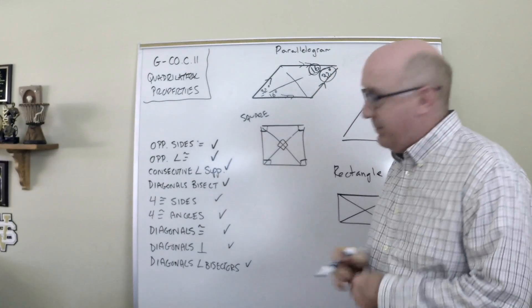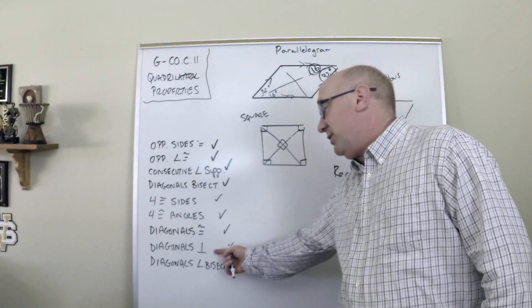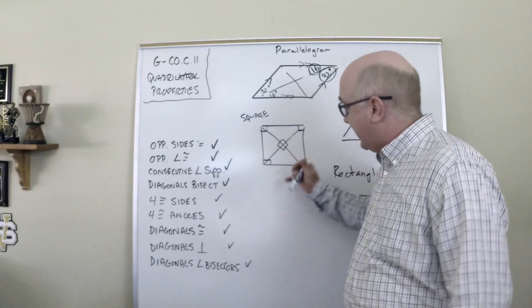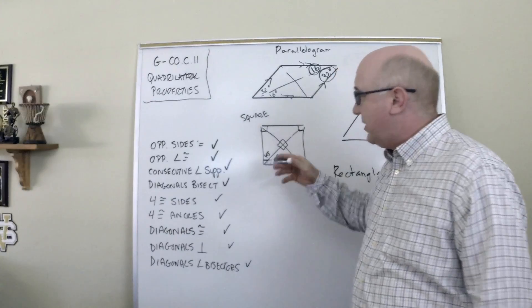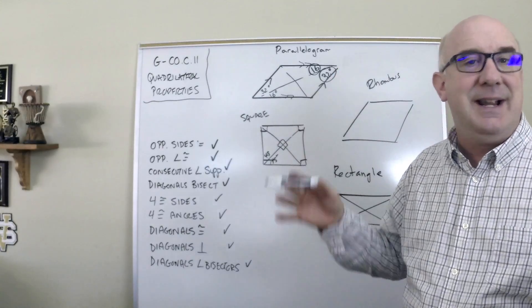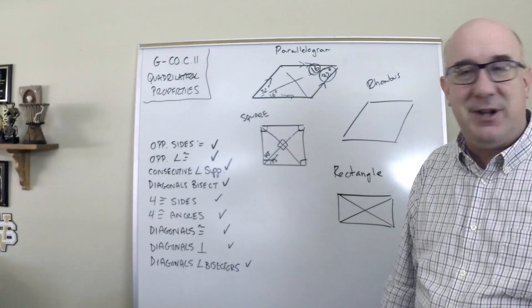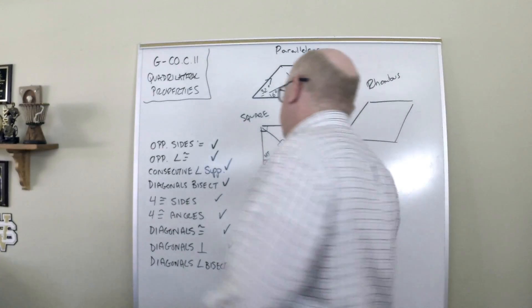I know that diagonals are angle bisectors and so these are 45 and so on, and I can find everything else I wanted in there. Pretty cool stuff. Let's go to the rhombus.